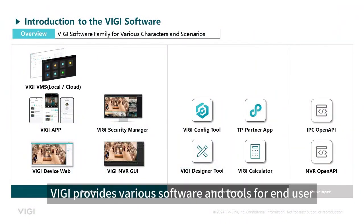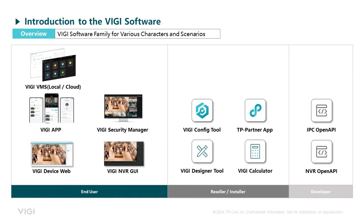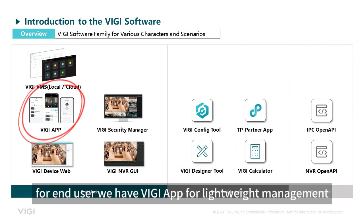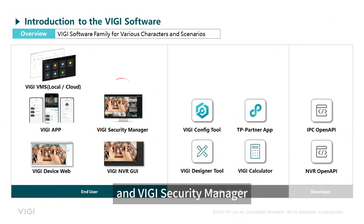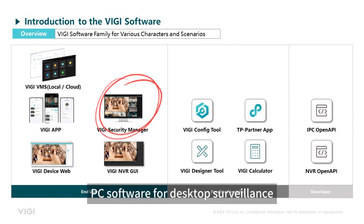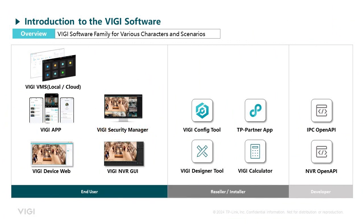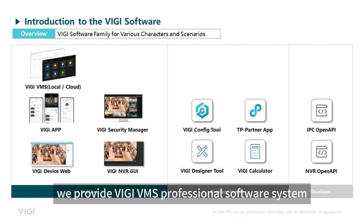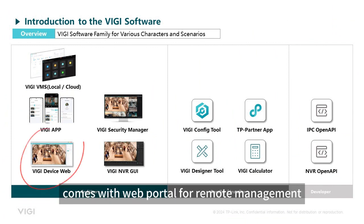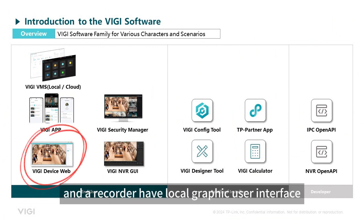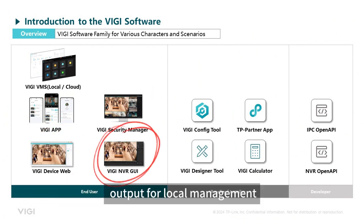VG provides various software and tools for end-users and business partners. For end-users, we have VG App for lightweight management, and VG Security Manager PC software for desktop surveillance. For centralized management, we provide VG VMS professional software system. Our cameras and recorders come with a web portal for remote management, and the recorder has a local graphical user interface output for local management.